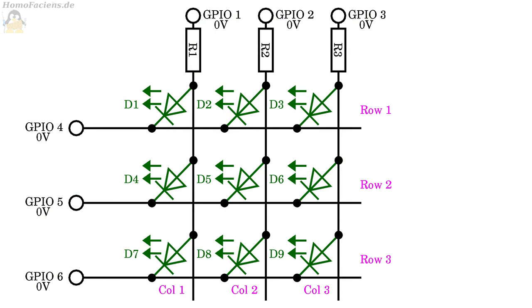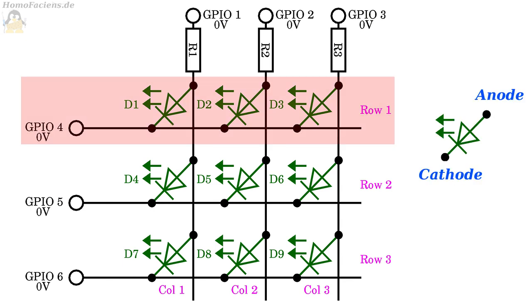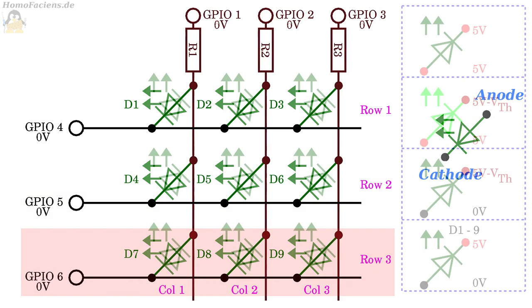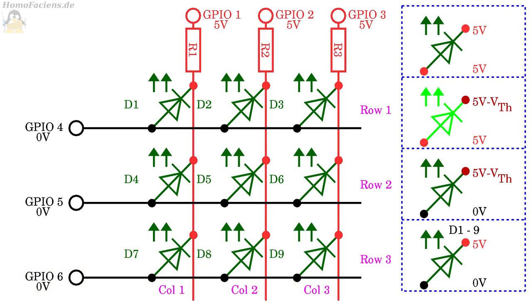So far we have treated the LED matrix in the so-called common row cathode configuration. All LEDs in a row are connected directly to one another and to a GPIO on their cathode side. If you swap the connections of all LEDs, you get the common row anode configuration. In order to address an LED in this arrangement, a high signal may only be applied to the active row while the other rows are switched to low signal. All columns except the column of the LED to be switched on must be set to high signal. All signals are inverted compared to the common row cathode configuration.